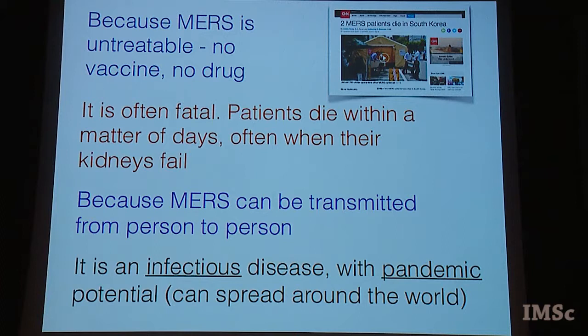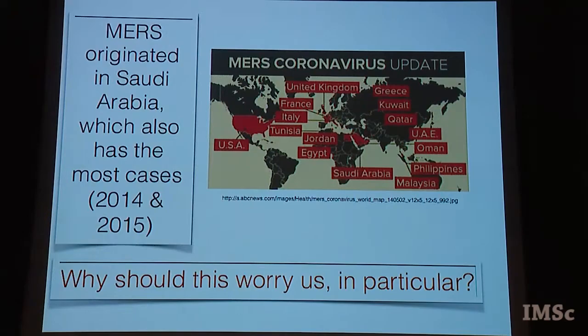MERS is most often fatal — patients die within a few days or weeks of being infected, often as a consequence of kidney failure. Importantly, MERS can move from person to person. This disease started with one gentleman in one hospital, then very rapidly spread across many people, until CNN reported two people died — out of about 100 to 150 diagnosed with MERS in South Korea. The last point is it has pandemic potential: it can spread around the world from one or two or three initial patients.